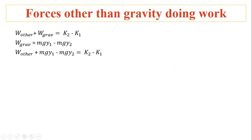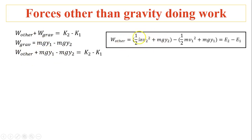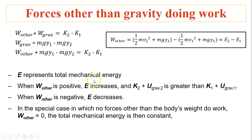Now, forces other than gravity doing work. Work done by other forces — this is the work-kinetic-energy theorem. Total work done equals the change in kinetic energy. Rearranging, gravity's work equals mgy1 minus mgy2. Substituting that, work done by other forces equals total mechanical energy at position 2 minus total mechanical energy at position 1. So if work done by other forces is positive, total mechanical energy increases; if negative, it decreases. In the special case when work done by other forces is zero, E is constant.